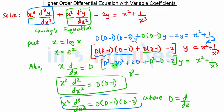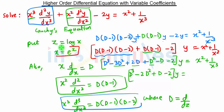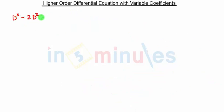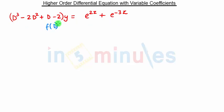Collecting terms: D³ remains, then -3D² + D² gives -2D², and 2D - D gives +D, minus 2, into y. On the right-hand side, substituting x = e^z: x² = e^(2z) and 1/x³ = e^(-3z). So our new equation is: (D³ - 2D² + D - 2)y = e^(2z) + e^(-3z).